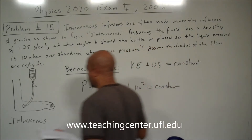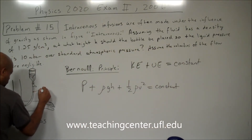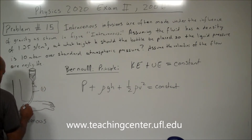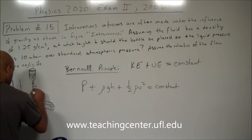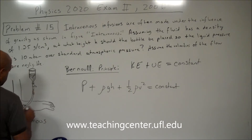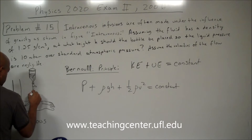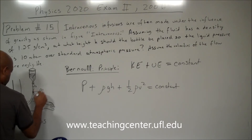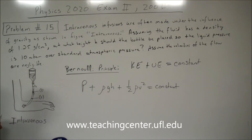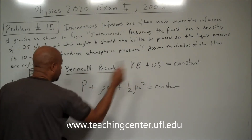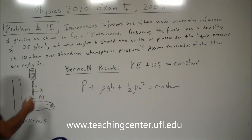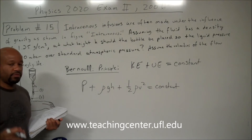If we choose two points — say point one and point two — the total mechanical energy at point one and the total mechanical energy at point two are going to be the same, although they may have different potential and kinetic energies. Understanding that, we can relate the two points in order to solve for any piece of information we're trying to find.